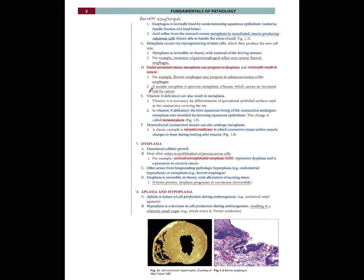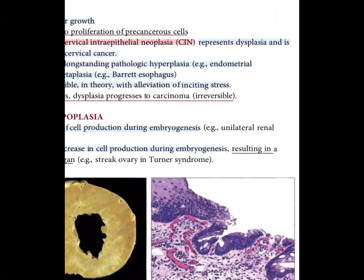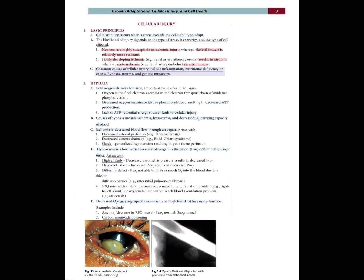A notable exception is apocrine metaplasia of the breast, which carries no increased risk for cancer. Vitamin A deficiency can also result in metaplasia. Vitamin A is necessary for differentiation of specialized epithelial surfaces, such as the conjunctiva covering the eye. In vitamin A deficiency, the thin squamous lining of the conjunctiva undergoes metaplasia into stratified keratinizing squamous epithelium — this change is called keratomalacia. Mesenchymal connective tissue can also undergo metaplasia; a classic example is myositis ossificans, in which connective tissue within muscle changes to bone during healing after trauma. Figures of Barrett's esophagus and keratomalacia/myositis ossificans are shown.